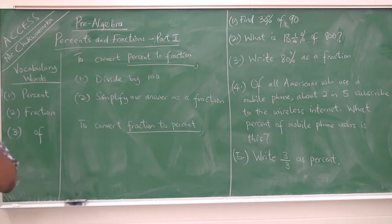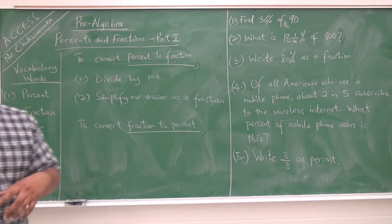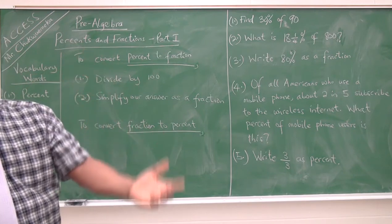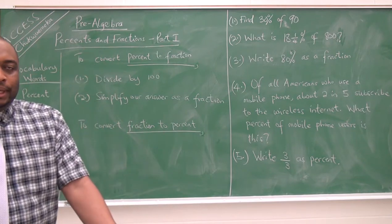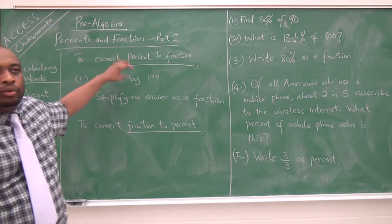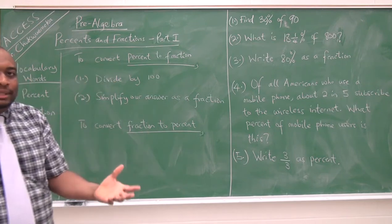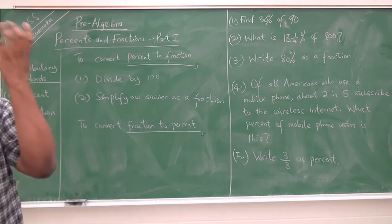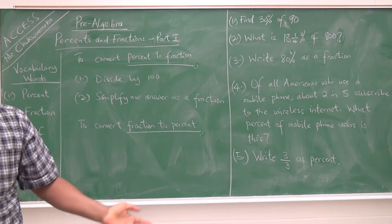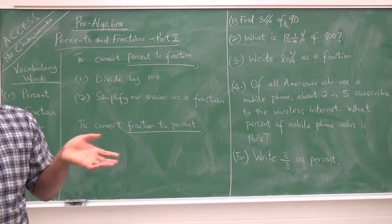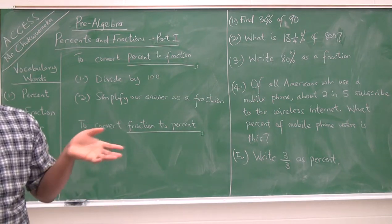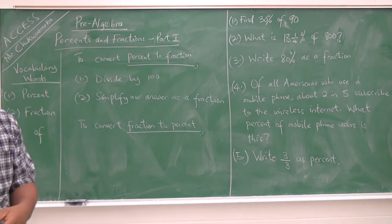What if we are given a fraction and expected to convert it to percent? That means we will do the opposite — we will multiply by 100, then simplify our answer, and then write the unit after our answer. That unit is percent.